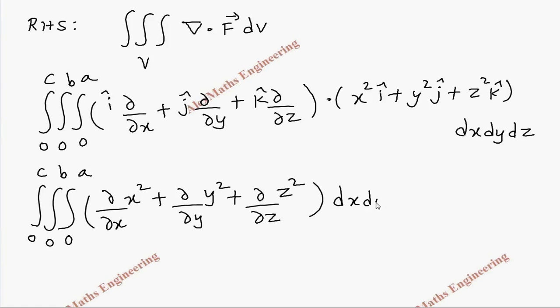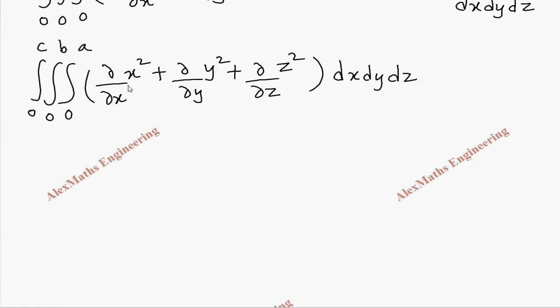Taking the partial derivatives gives 2x + 2y + 2z, integrated over dx dy dz with limits x: 0 to a, y: 0 to b, z: 0 to c.